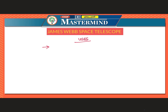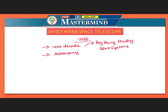James Webb Space Telescope will be the premier observatory of the next decade, serving thousands of astronomers worldwide. It will study every phase in the history of our universe — from the first luminous glow after the Big Bang to the formation of solar systems capable of supporting life, and the evolution of our own solar system. It will enable broad investigations in astronomy and cosmology, including observation of the most distant events, formation of first galaxies, and detailed atmospheric characteristics of potentially habitable exoplanets.